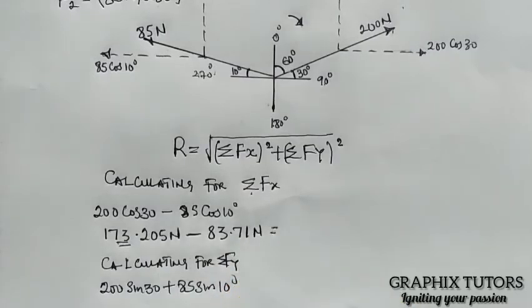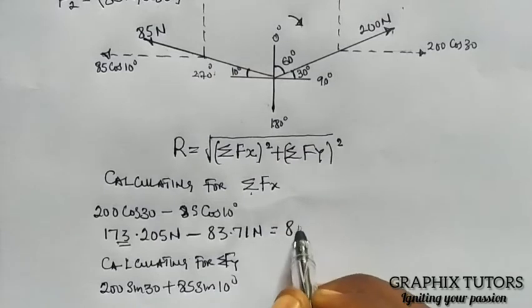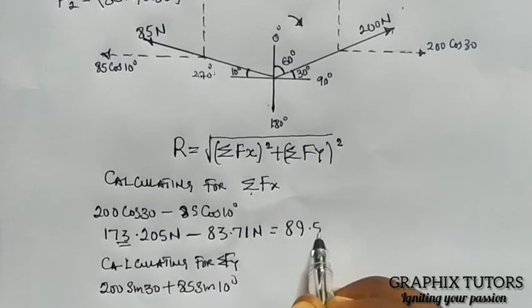So if you subtract it, 173.21 minus 83.71, that will give me 89.5 Newton.